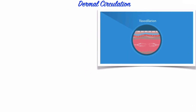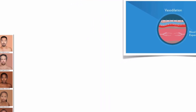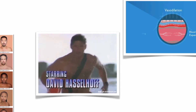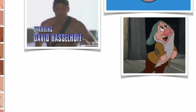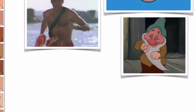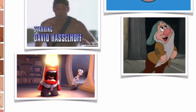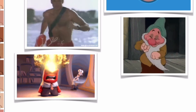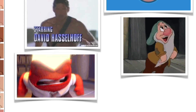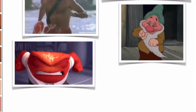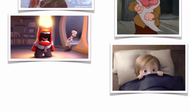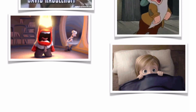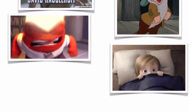If those vessels dilate or widen, the red tones become much more pronounced. For example, skin becomes flushed and red when body temperature rises because the superficial blood vessels dilate so that the skin can act like a radiator and lose heat. When we are shy, embarrassed, or angry, dermal circulation might increase in the face, causing blushing. The role of dermal circulation influencing skin color is also observed due to lack of blood flow.